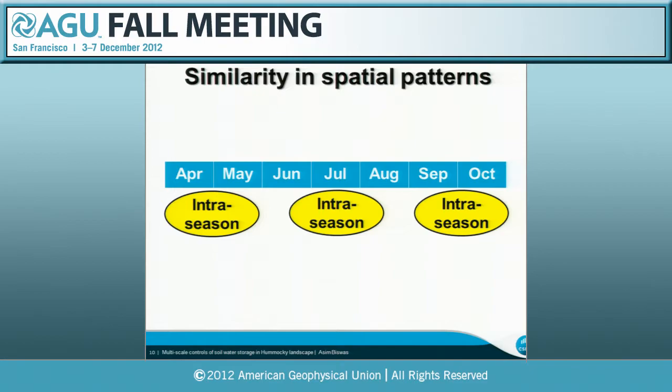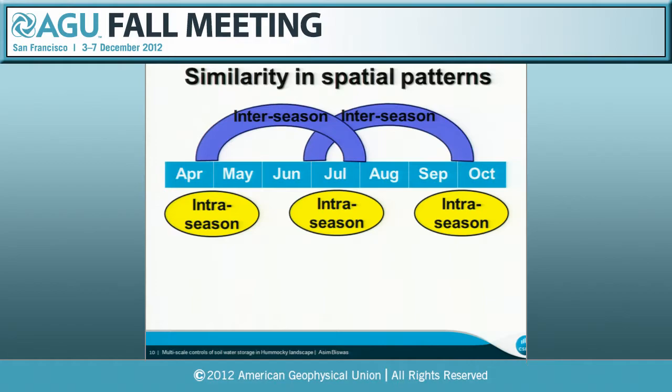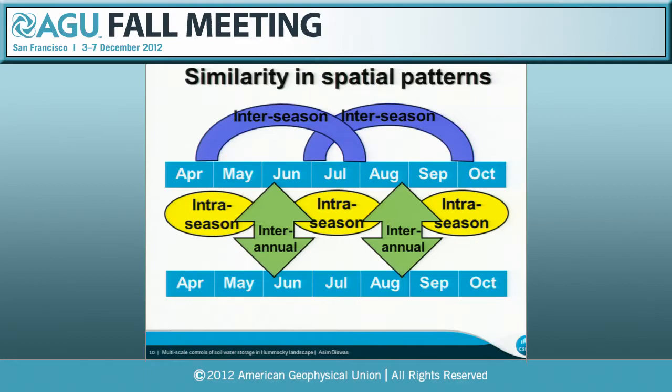I looked at how similar or dissimilar the spatial patterns are, first using simple Pearson correlation analysis. I defined intra-season variability (within a season), inter-season similarity (between seasons), and inter-annual similarity (same time across different years, over four years of study). The strongest correlation was observed at the intra-season level, then inter-annual, then inter-season.